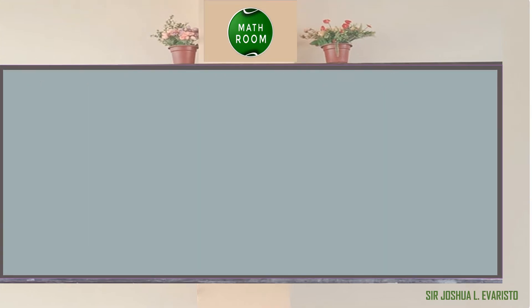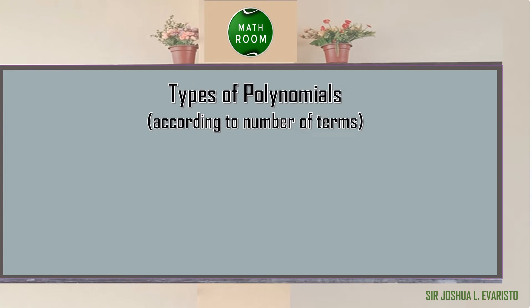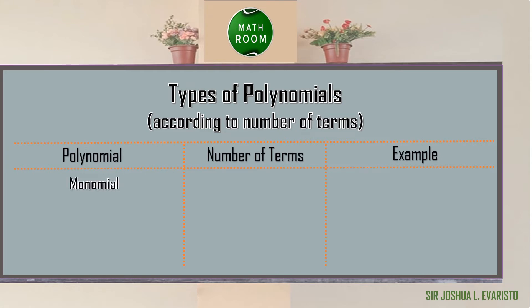Let us review the types of polynomials. Polynomials can be classified according to number of terms. A monomial — from the Greek prefix 'mono' meaning 1 — has one term, for example 8x squared. A binomial — from the Latin prefix 'bi' meaning 2 — has two terms, for example x squared minus 4x.